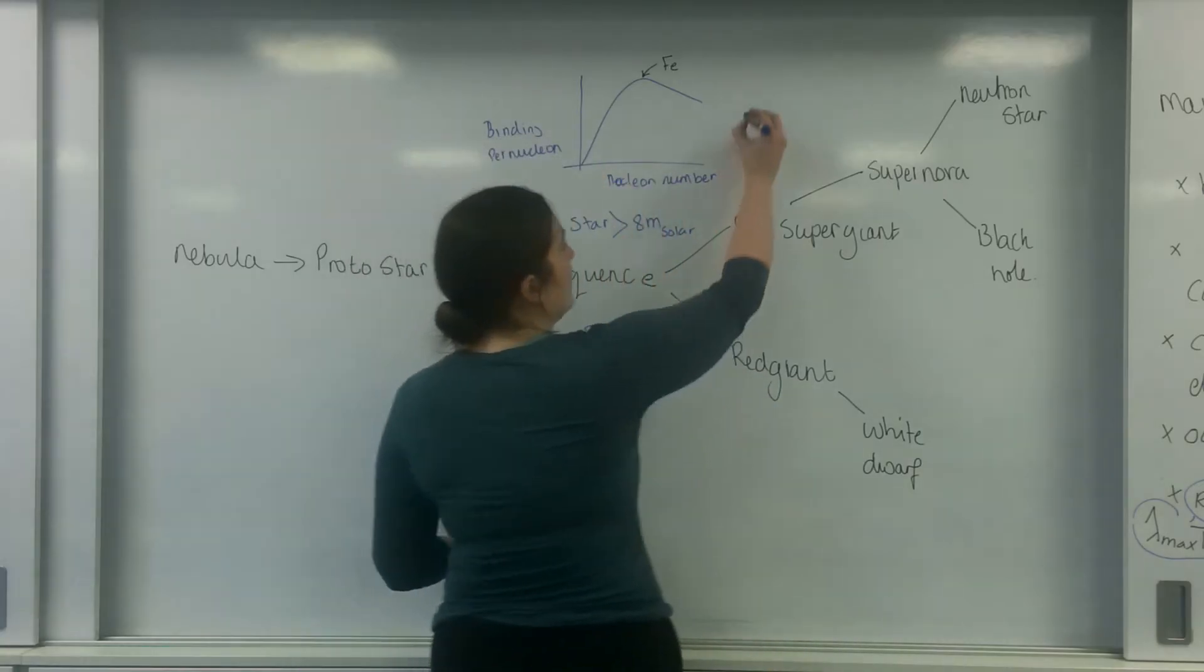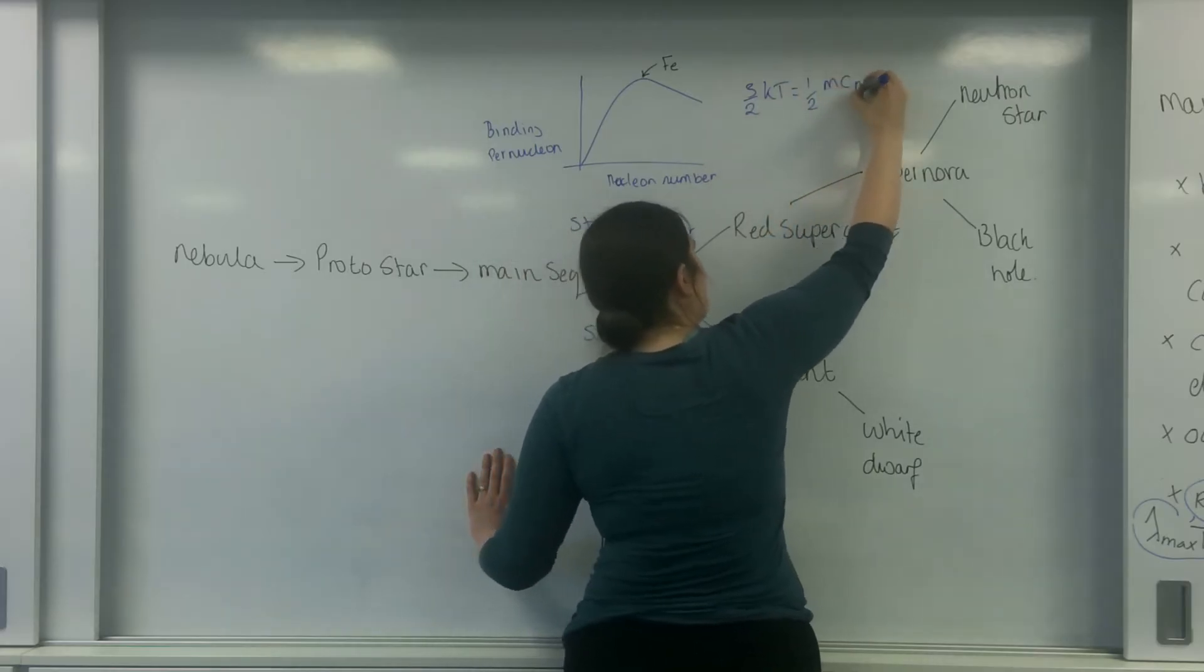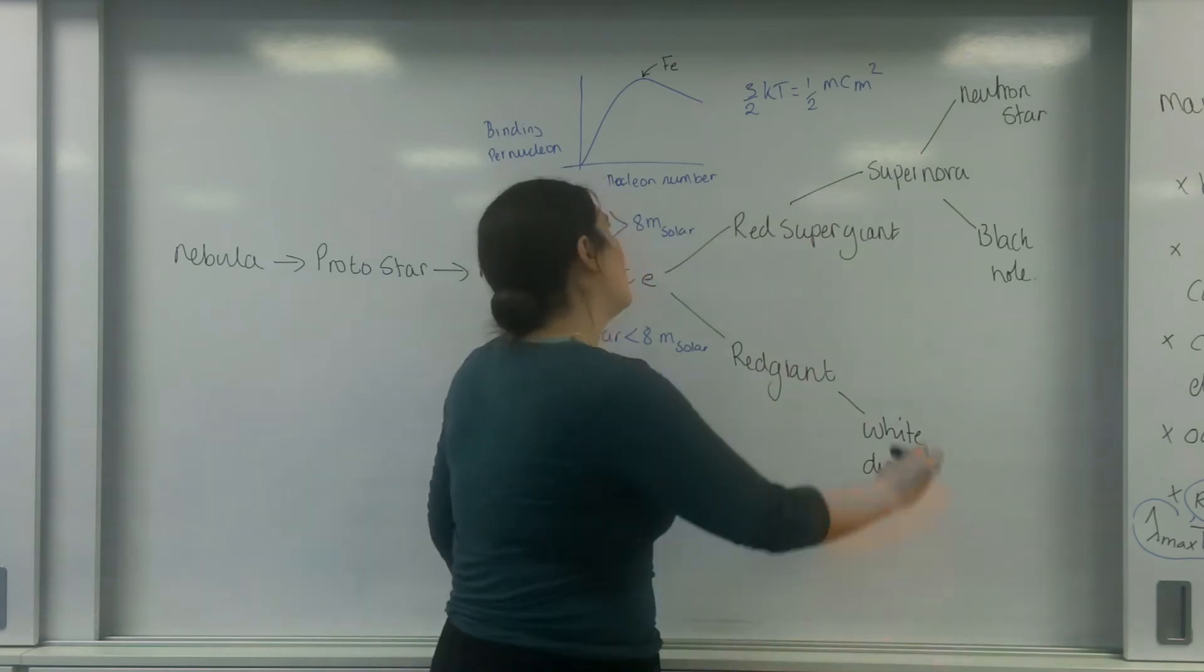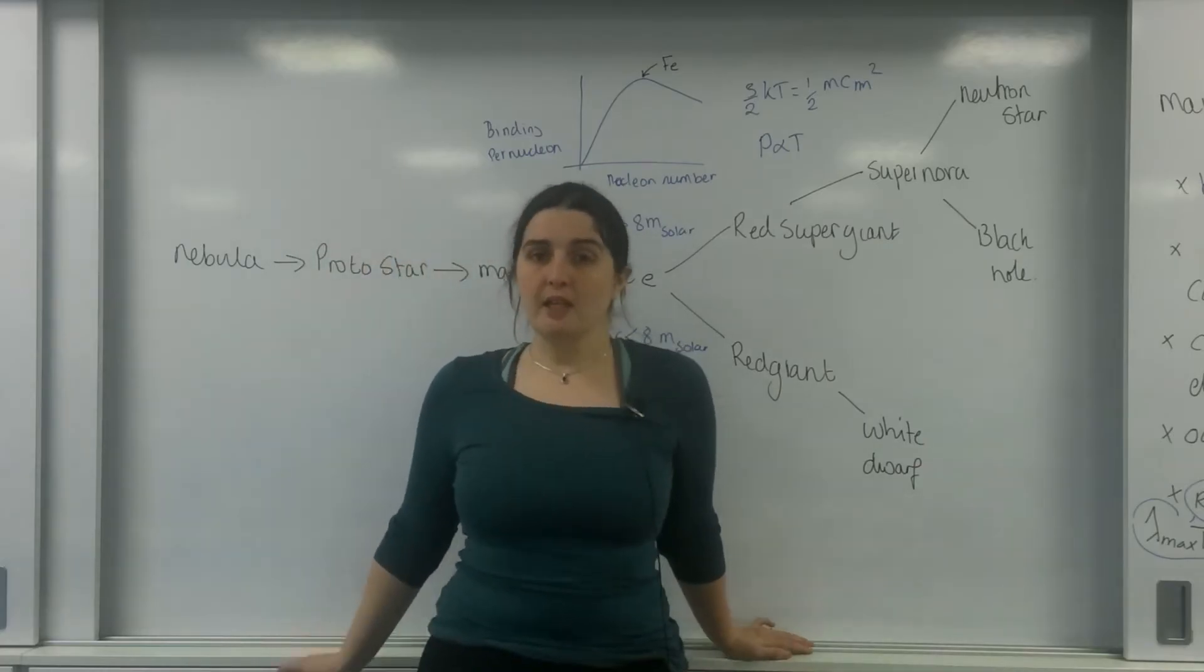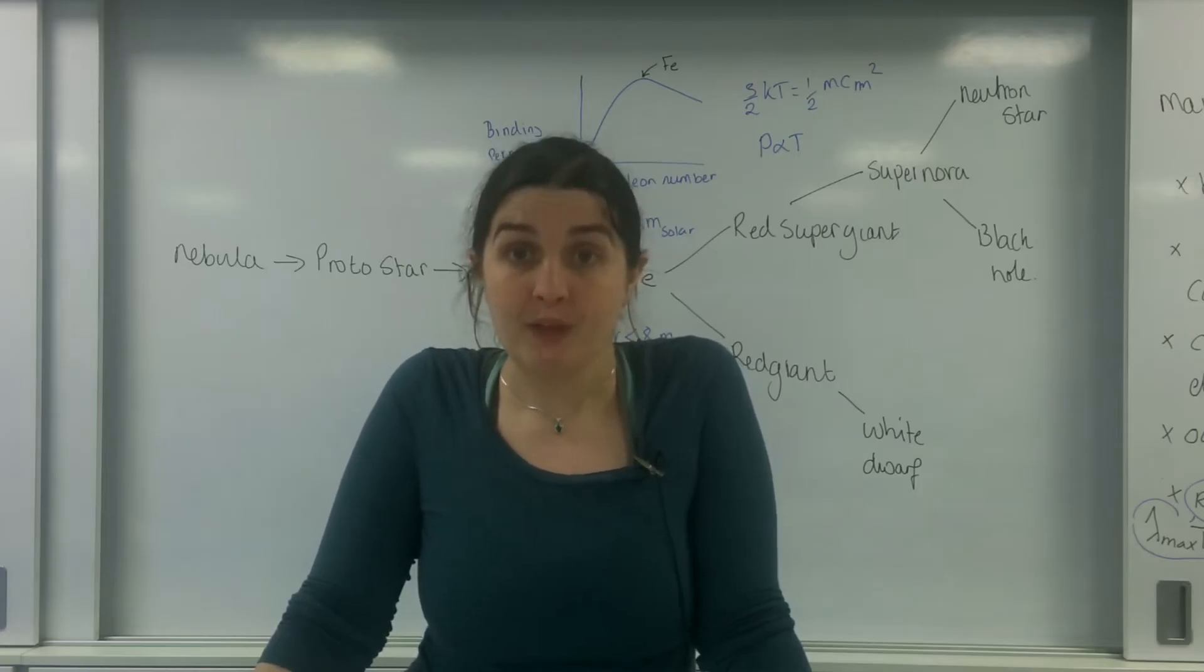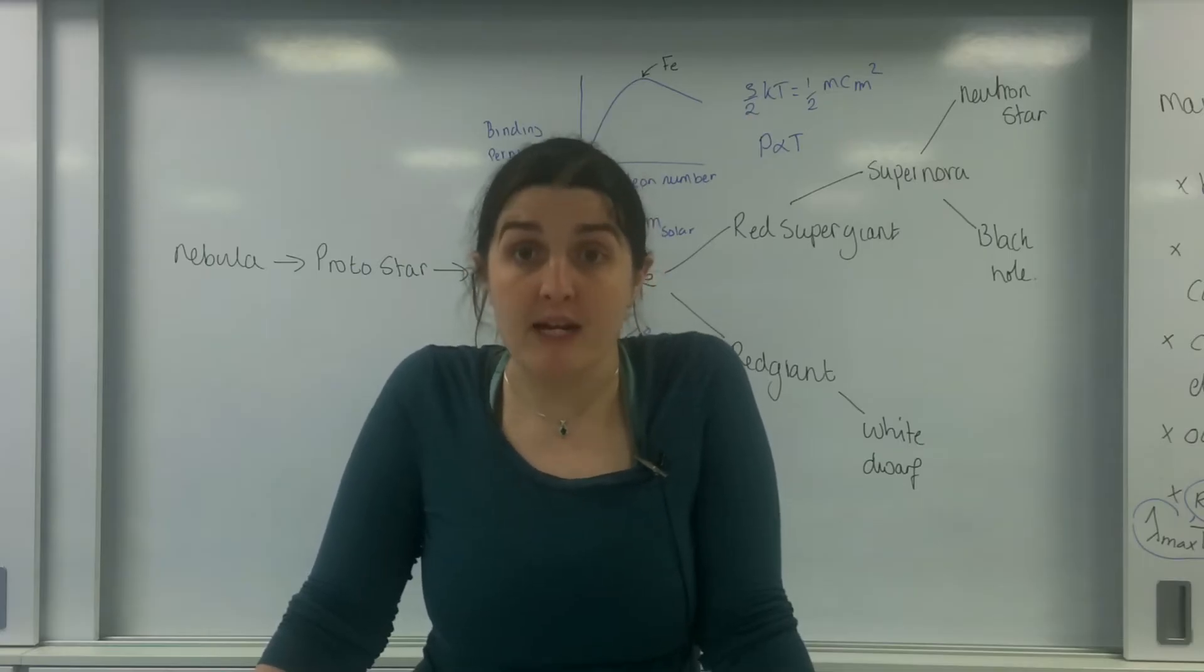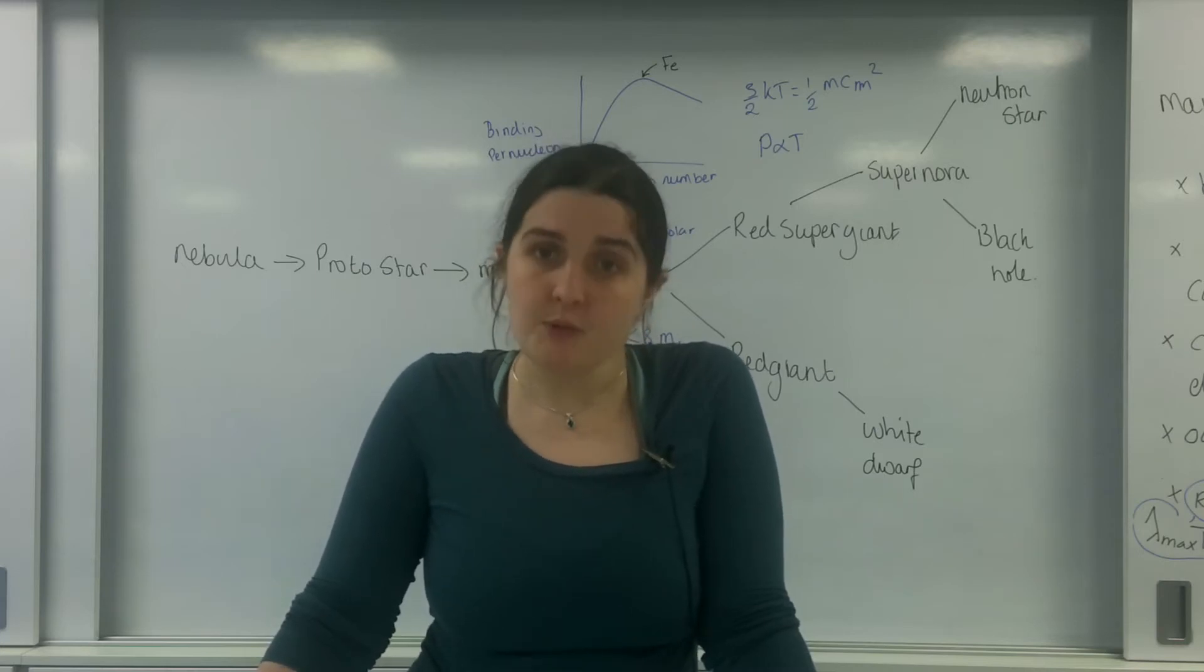So the only way I can explain this: we already know that 3/2 kT equals 1/2 mC rms squared. We already know that temperature is directly proportional to energy. I also know that pressure is directly proportional to temperature. So if all of a sudden, instead of emitting energy, I'm going to absorb it, that's going to affect my temperature. And if my temperature goes down, my pressure goes down too. And it's a very sudden thing. The easiest way I can explain it is get a balloon and popping it with a needle. You are decreasing the pressure very quickly.